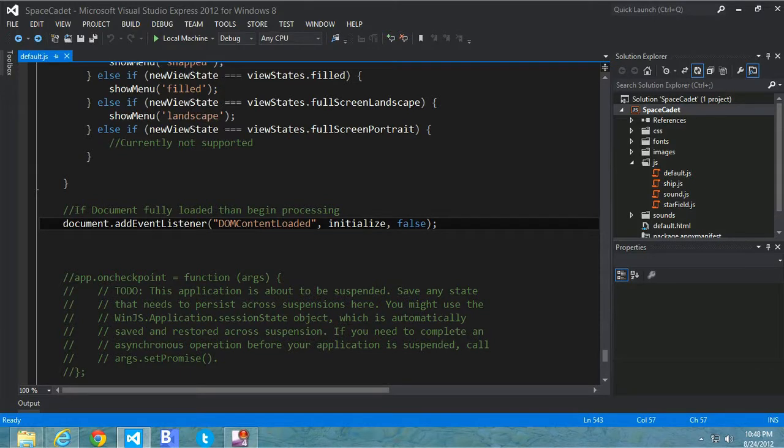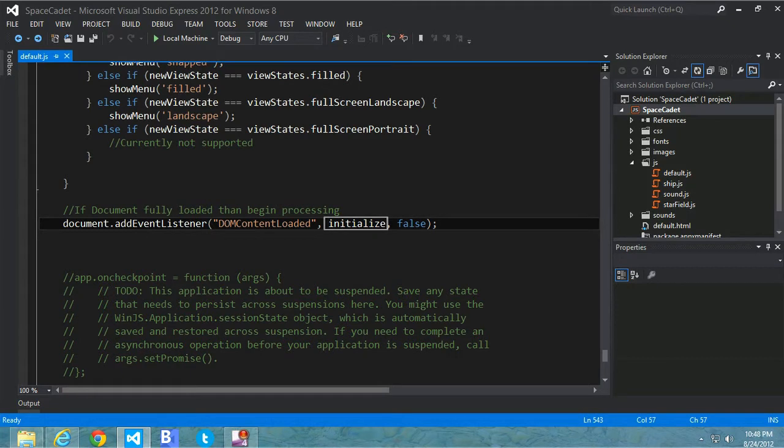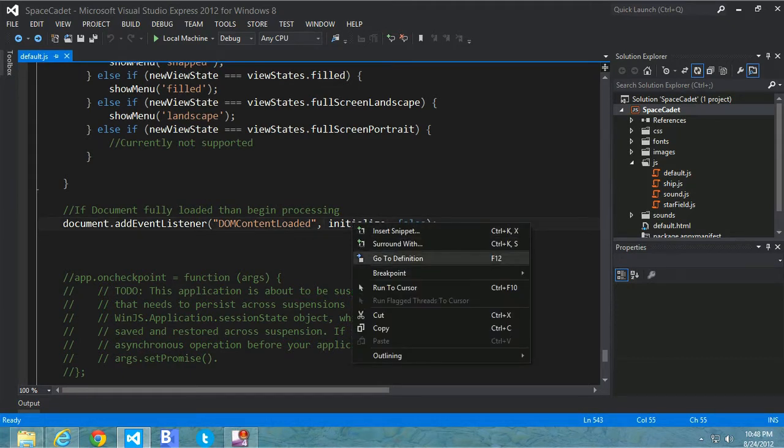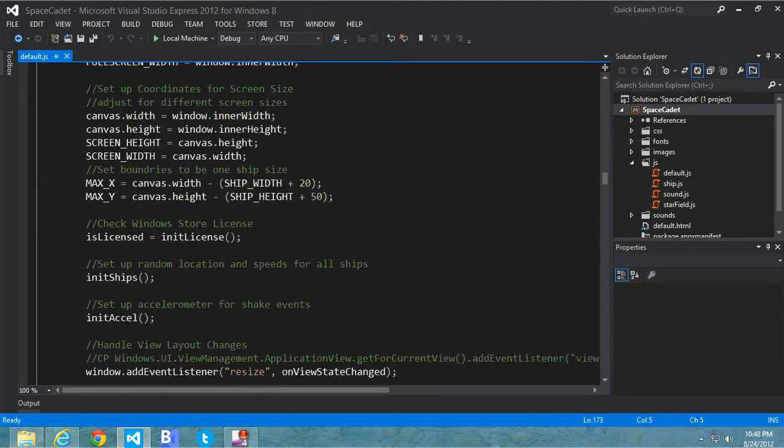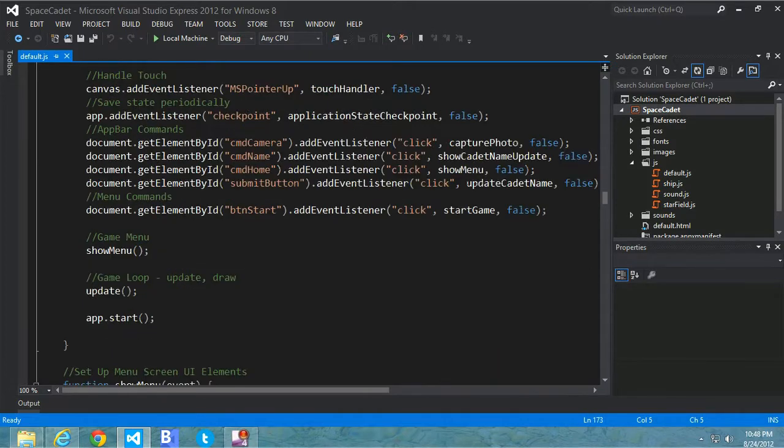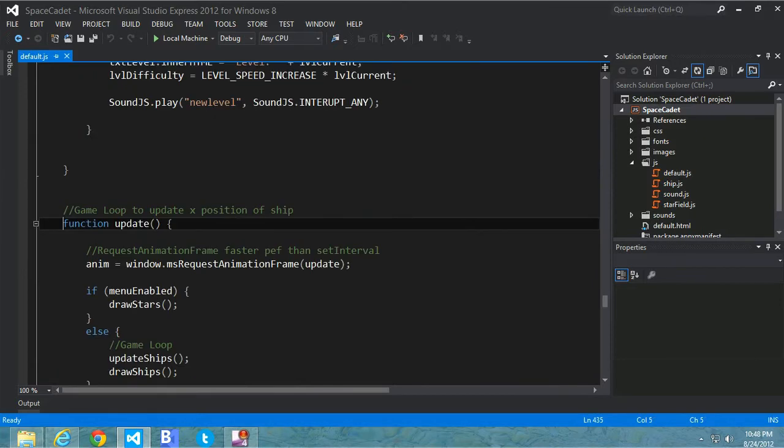Last week we talked about a game loop. So what does a game loop look like in practice? What I have here is the Win8 game kit code, and we are in the default JS file. You can see the game starts after the DOM content loaded event with the initialize function. If we drill into initialize, you can see we are using just a standard HTML5 canvas that is a function called update. This is the game loop.